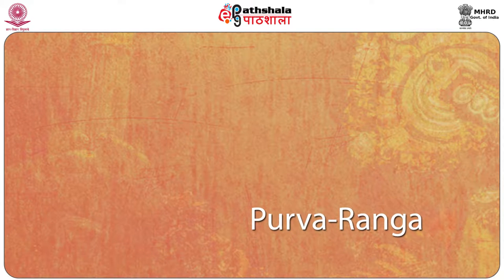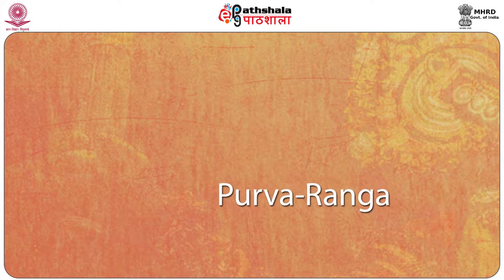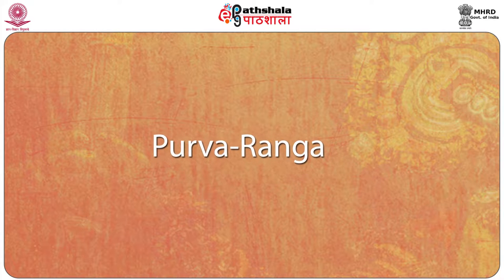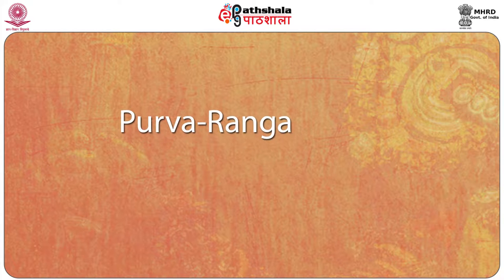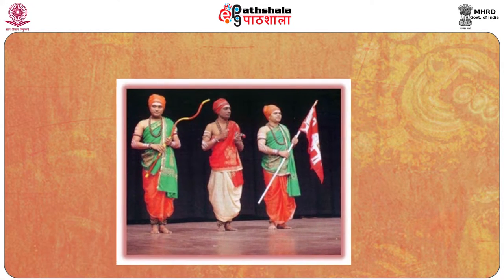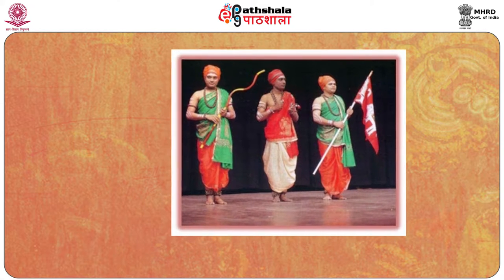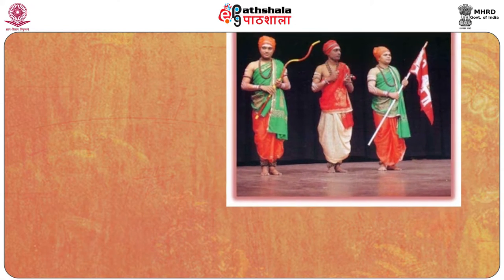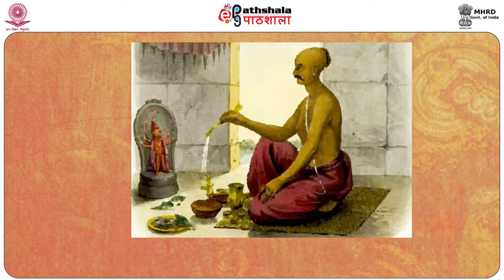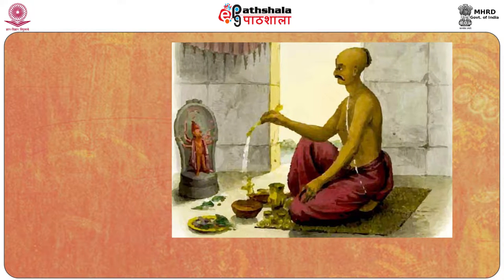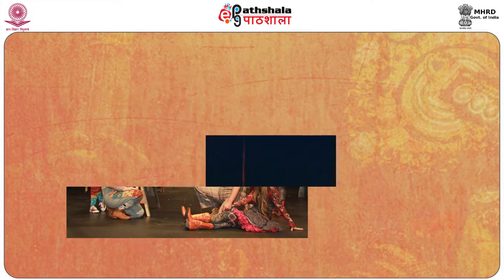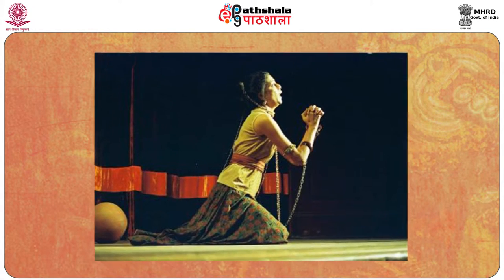Sanskrit plays commenced with an elaborate ritual consisting of some twenty ceremonies called the Purvarang, involving music and dance which were performed before the play commenced. Of these, nine of them were performed behind the curtain. The sutradhar, who was the director, the chief actor and the stage manager, clad in immaculate white, enters with his two assistants onto the stage and offers worship to the presiding deity of the theatre to ensure success to the producer and good luck to the actors. After this only did the sutradhar summon the leading actors and open the play with a prologue, which announced the time and place of the play and introduced the playwright.